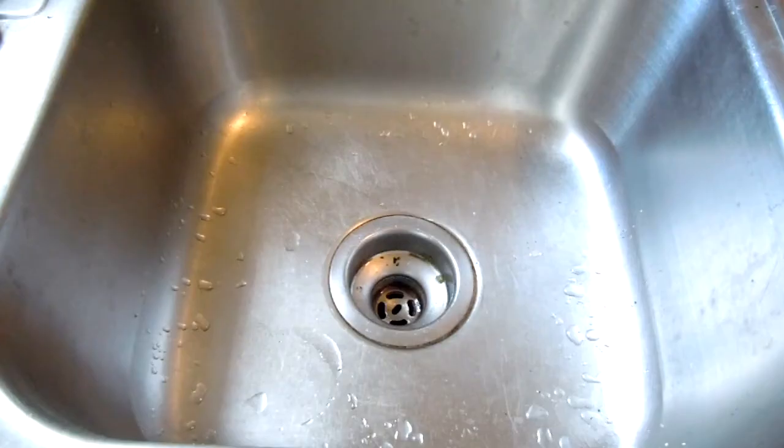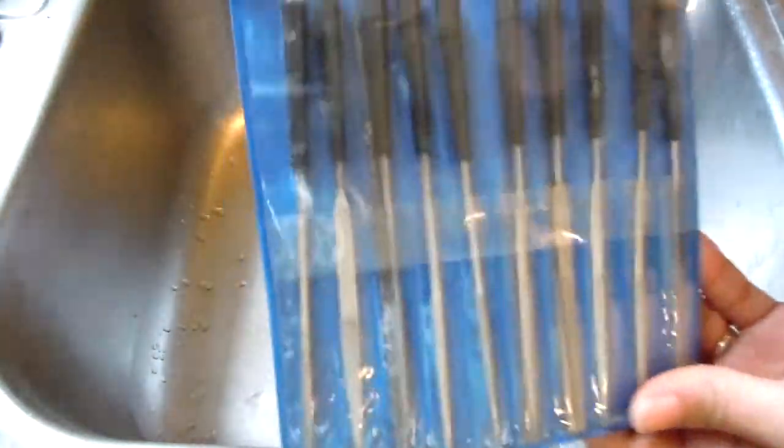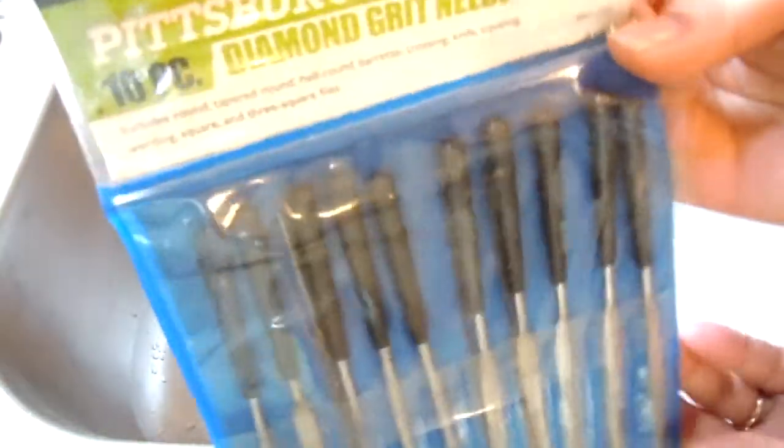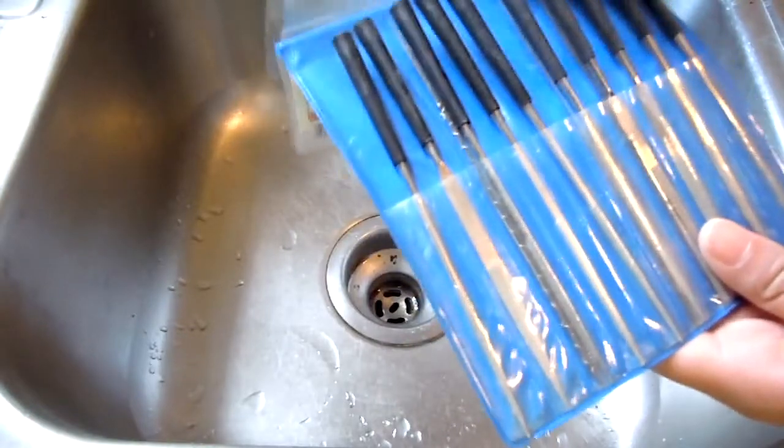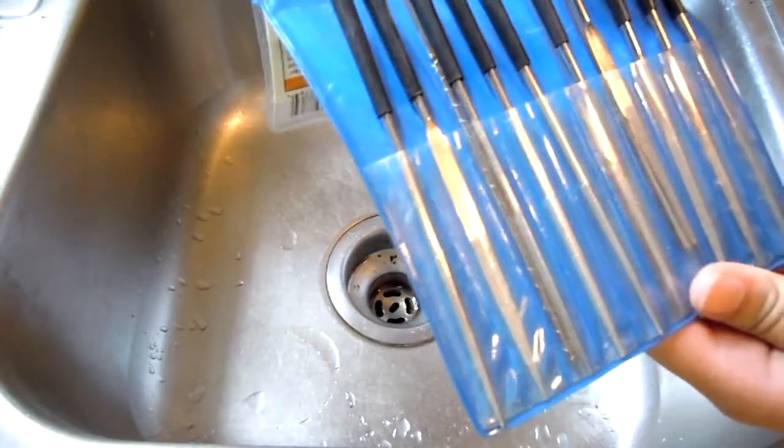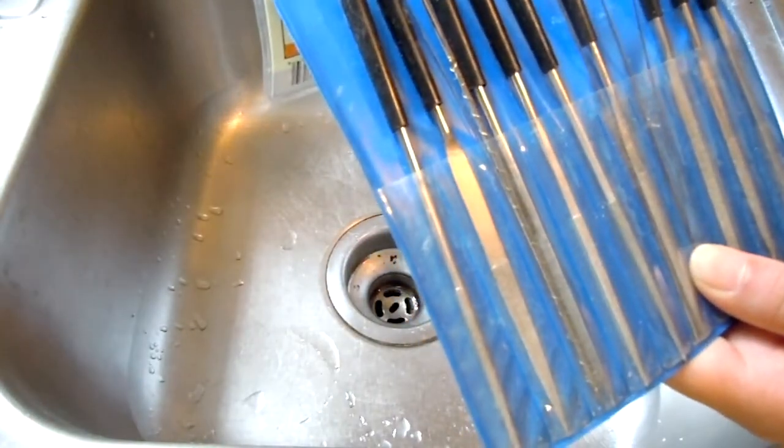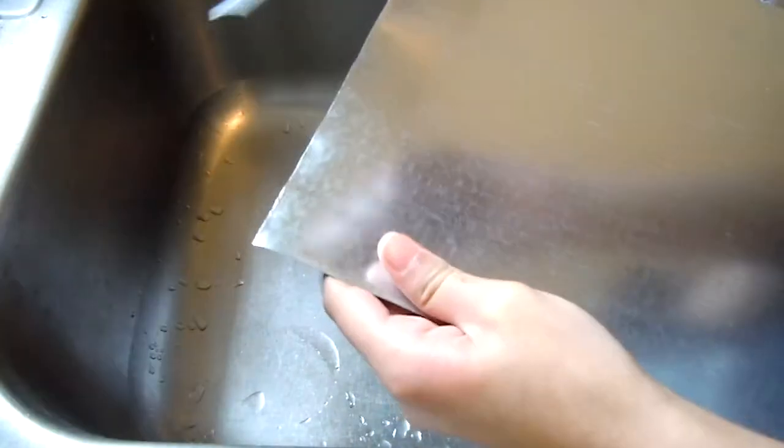Once you're done, you'll notice that you have some very sharp jagged edges. So what you're going to need to do is take your needle files, which are optional, or you can use sandpaper as well and just really smooth those edges and make sure that it's safe to handle the sheet metal. Because you really don't want to get cut by this stuff. It's really gnarly.